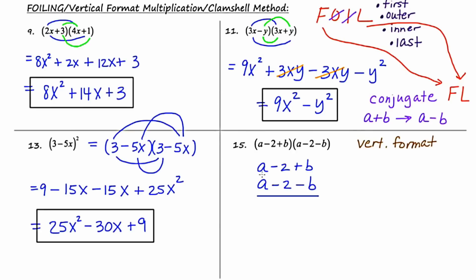So: a times a is a squared, a times negative 2 is negative 2a, and a times b is ab. Moving to the middle: negative 2 times a is negative 2a, negative 2 times negative 2 is positive 4, and negative 2 times b is negative 2b. Then the last term: negative b times a is negative ab, negative b times negative 2 is plus 2b, and negative b times positive b is negative b squared.